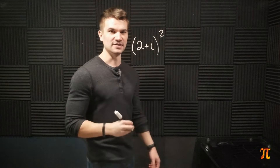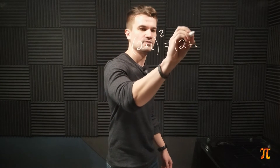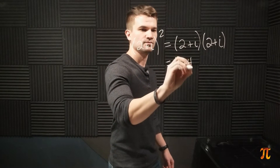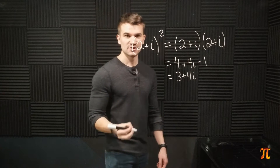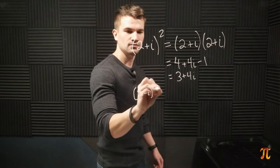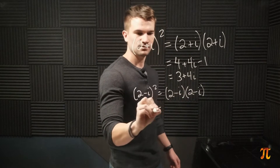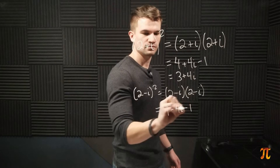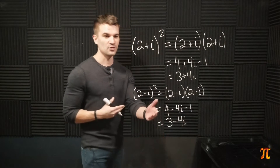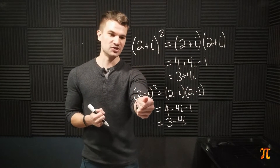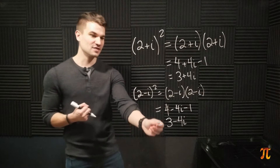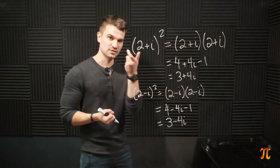Maybe that one example isn't very convincing, so let's look at something else. If we have 2 plus i and we square it, we get 3 plus 4i. So what happens if we square 2 minus i? We get 3 minus 4i. The statement '2 plus i squared equals 3 plus 4i' remains true whenever we switch each instance of i. This 3 minus 4i can be written as 3 plus 4 times negative i.